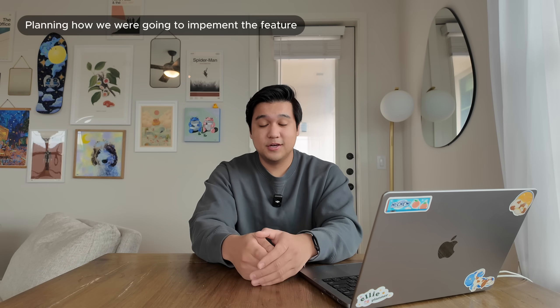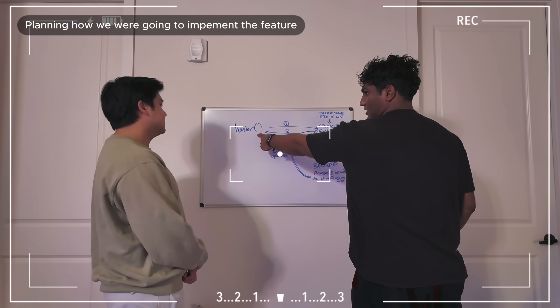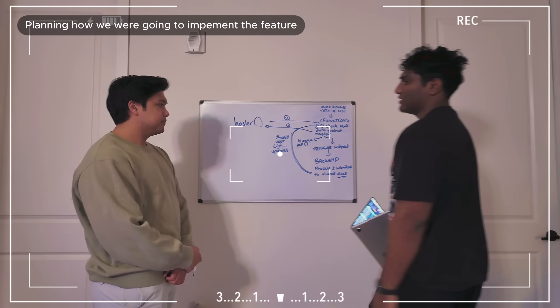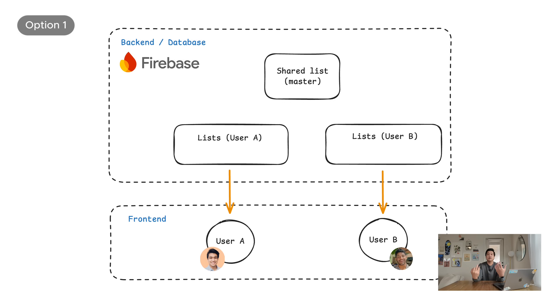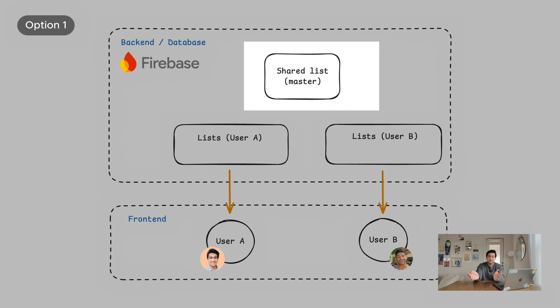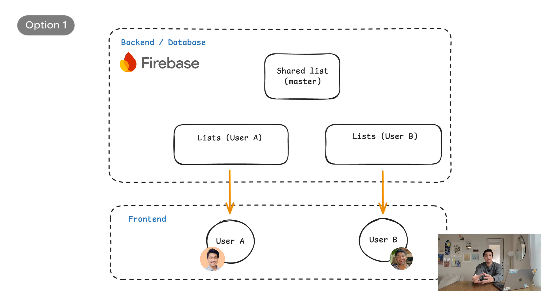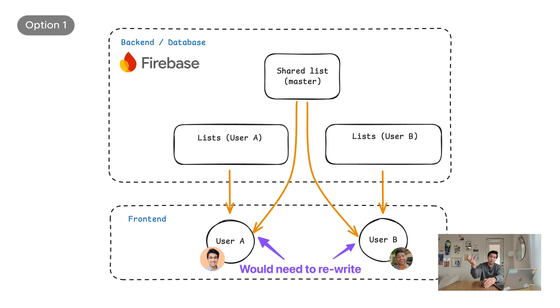Once we decided on the scope — just share a list, users can edit the list, that's it — we worked on the architecture. How are we actually going to implement this from a technical standpoint? We basically had two choices. Option one: create a new section of the database not tied to a specific user, where all the shared tasks live. When a user is added to the shared task, they pull from this database. This is probably how most apps do collaboration features, but the big con is that I would have to really rewrite the app to work with this new structure — probably a month of work.